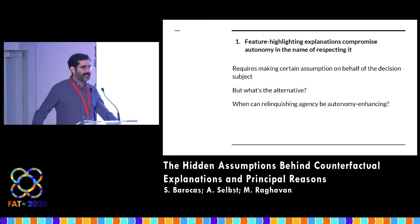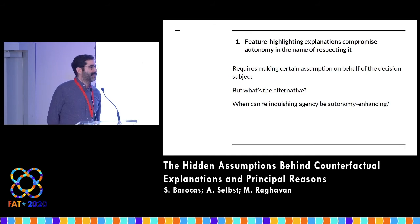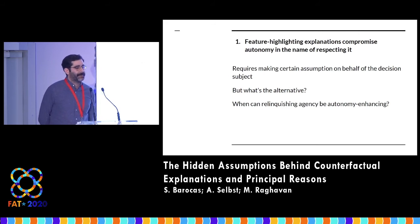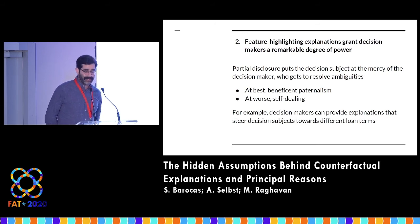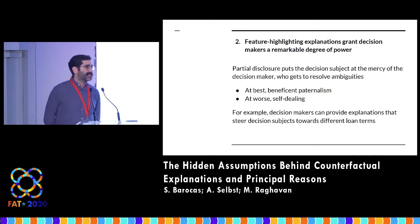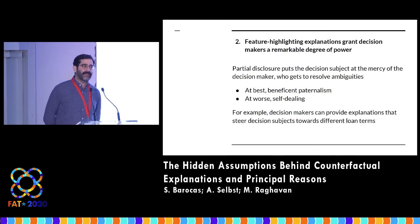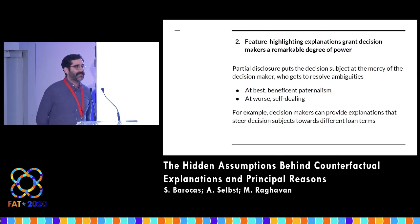In the paper, we actually talk about some instances where this is often the case, like when you seek out expert advice of a lawyer or accountant, and you can think about situations where relinquishing agency allows someone to get an explanation that serves their best interests. But that's not always the case and you have to think carefully about when that's true. We can also think about the degree to which the decision maker is given significant latitude to figure out how to provide such explanations. In the best case, this might be seen as beneficent paternalism where you're actually trying to tell the person what you think is in their best interest. But at worst, this leaves a lot of room for self-dealing — giving explanations that are in the interest of the decision maker, like 'here's the way you can get credit at an interest rate that will be particularly profitable to me' rather than the rate you might want.